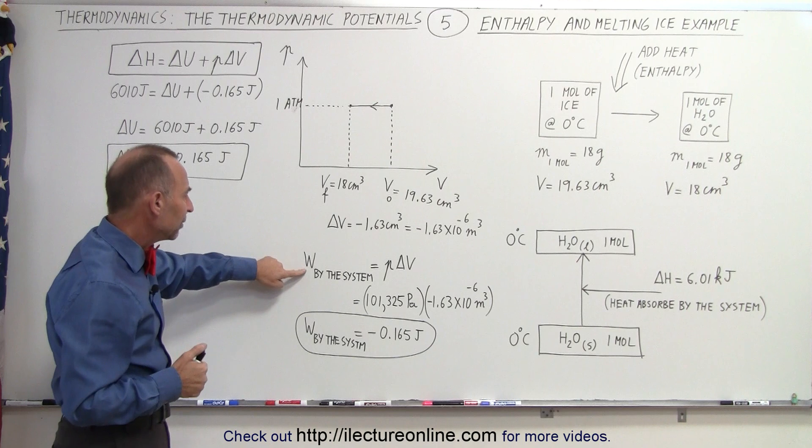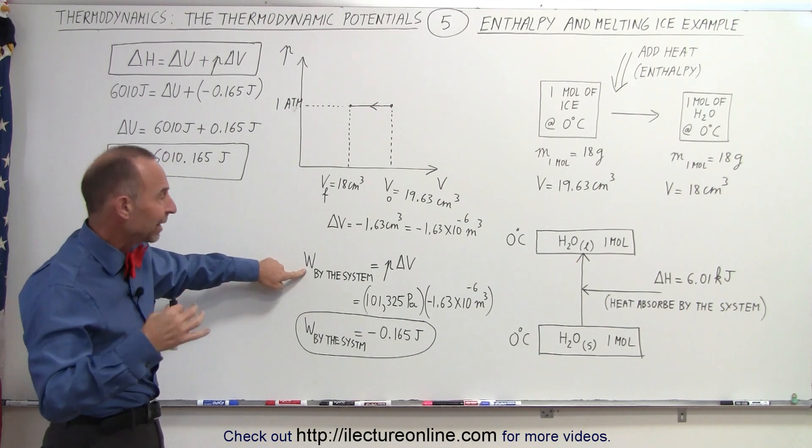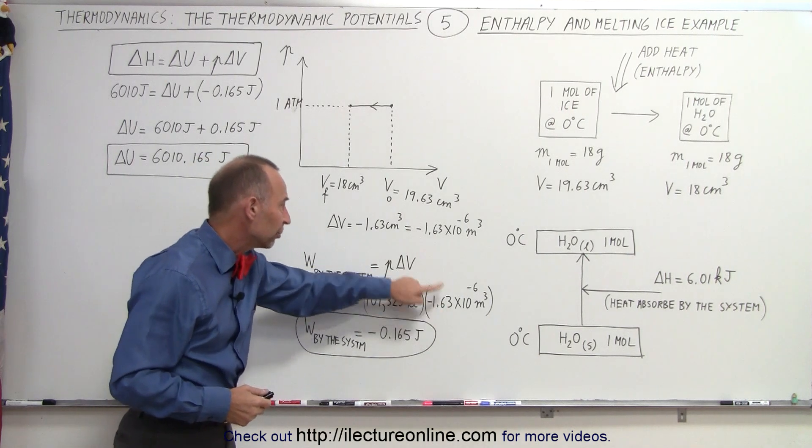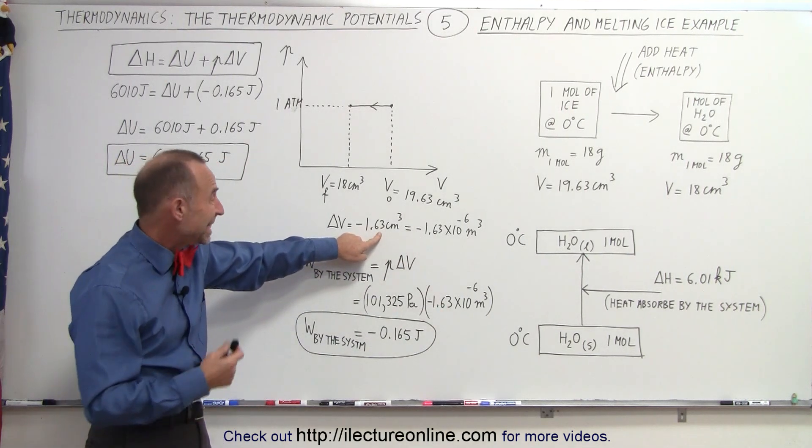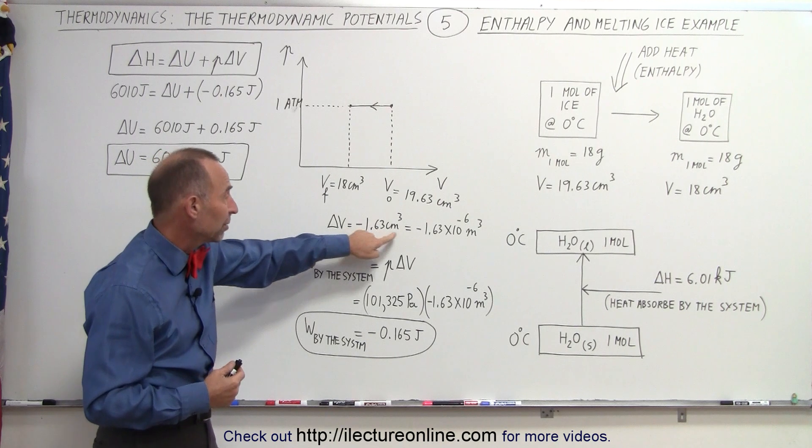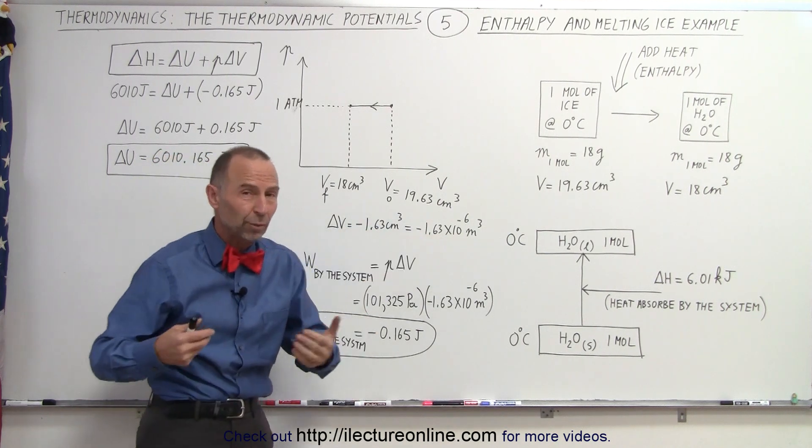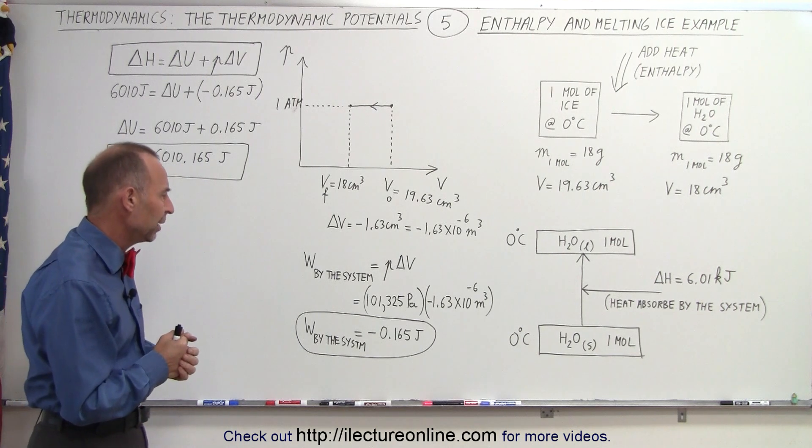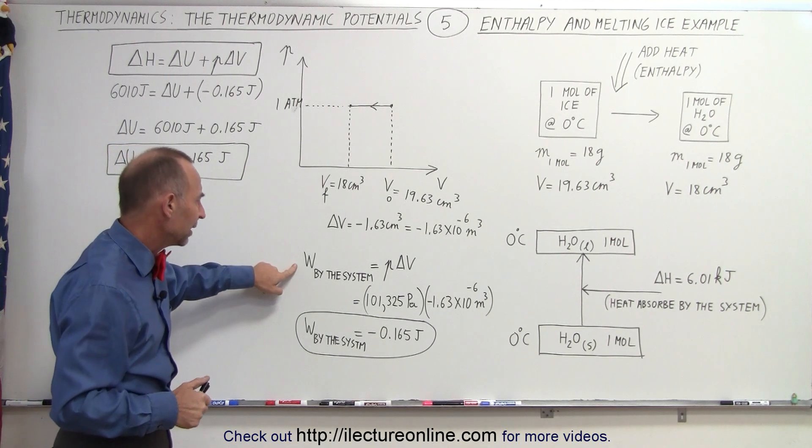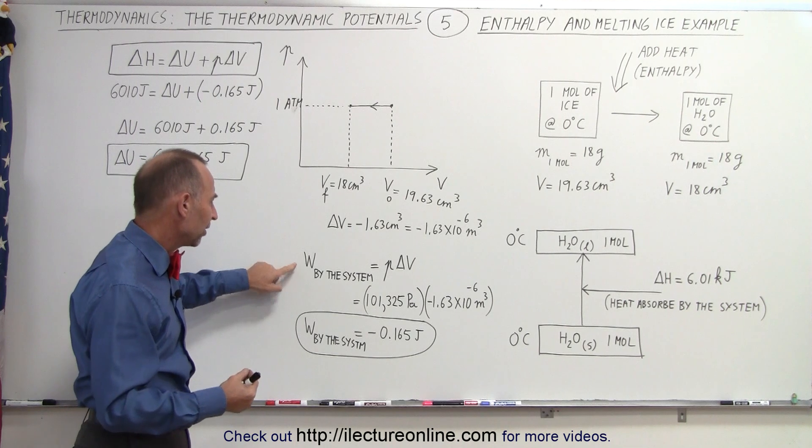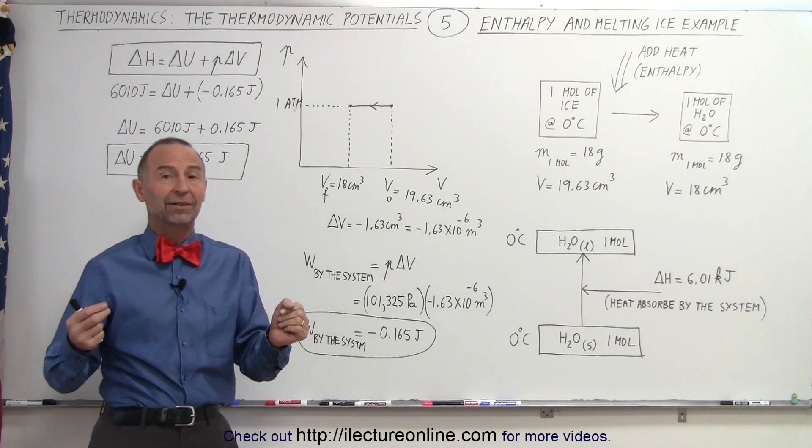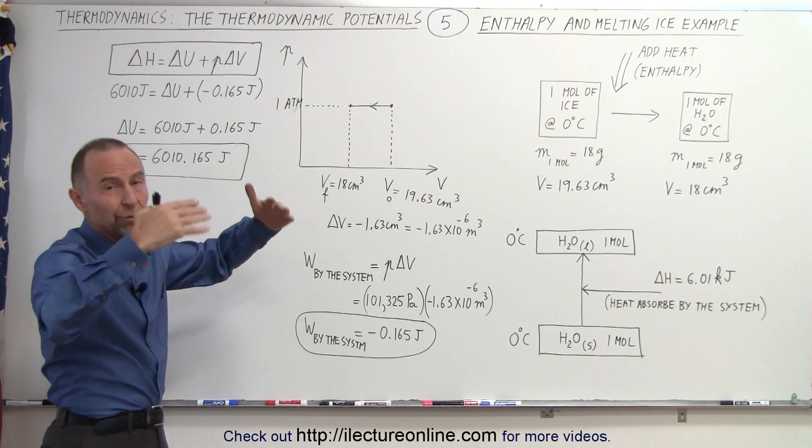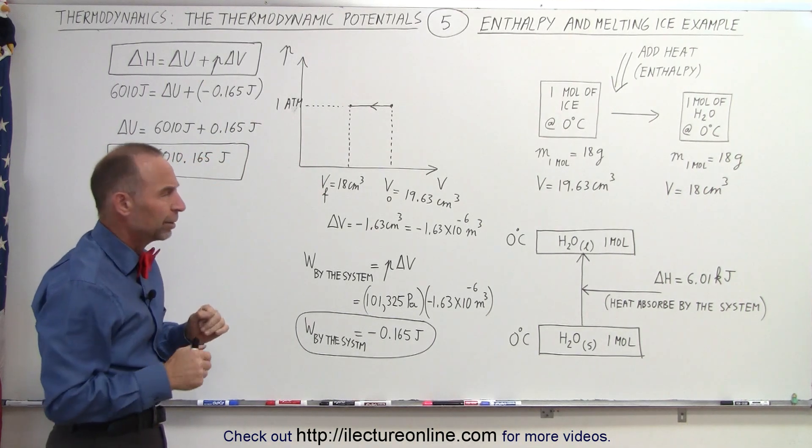If we now calculate the W, the work done by the system, that is equal to the pressure times the change in the volume. The change in the volume, of course, is going to be negative 1.63 cubic centimeters converted to cubic meters. We have to multiply times 10 to the minus 6 because there's a million cubic centimeters in a cubic meter. So when we then calculate the work done by the system, we can see that it's negative work done by the system.